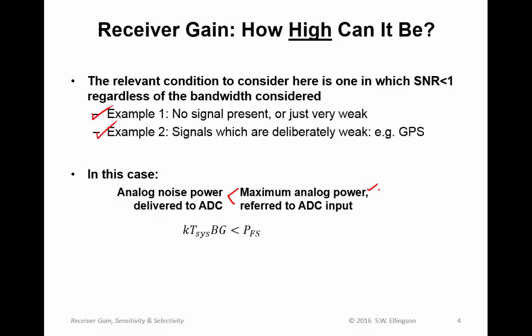The analog noise power delivered to the ADC is K times T-sys times bandwidth, that gives us total power, times receiver gain, should be less than the full-scale power of the ADC. And of course, we'd prefer that to be much, much less than the full-scale power of the ADC.